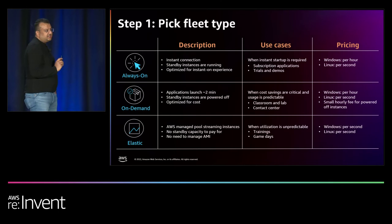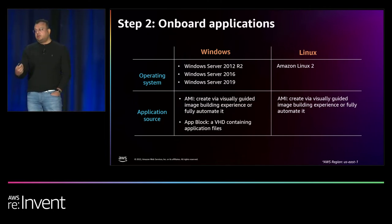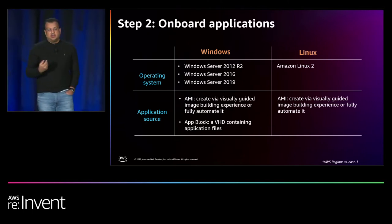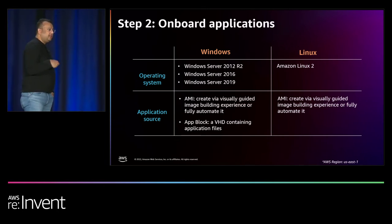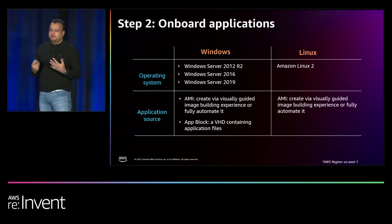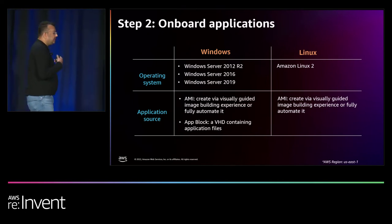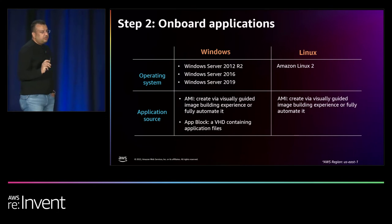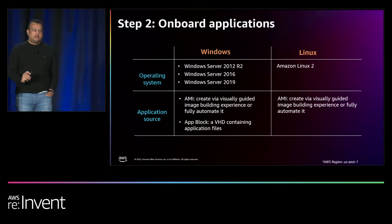After picking the fleet type, you onboard the applications. We support three versions of the Windows Server operating system, Amazon Linux 2, and this list is growing for both Windows and Linux. You can bundle and package multiple applications in a catalog to further optimize costs. You pick the application source — you could bundle in an image, and we provide a complete visually guided administrative experience, a step-by-step guided flow for creating that image and optimizing your applications within it.